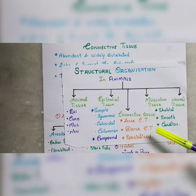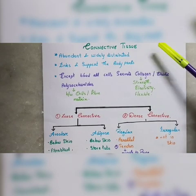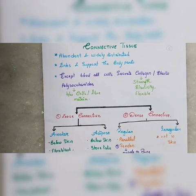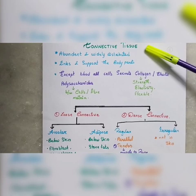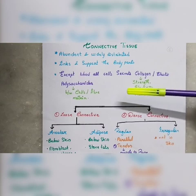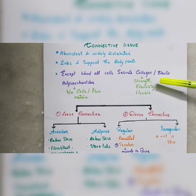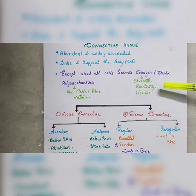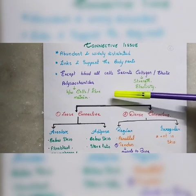Now we will talk about connective tissue. Connective tissue is three types: loose connective tissue, dense connective tissue, and specialized connective tissue. Connective tissue links and supports body parts and is spread widely throughout the body — except blood, which is a specialized connective tissue. Connective tissue contains collagen and elastic fibers, providing strength, elasticity, and flexibility. It also contains ground substance (polysaccharides) in which cells and fibers are embedded.